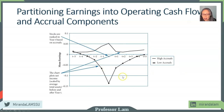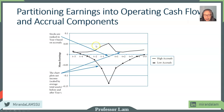Companies with net income scaled by assets show that low accrual firms will reverse, and high accrual firms will also reverse. When net income is high relative to operating cash flow, the firm will have recorded income-increasing accruals. Because accruals automatically reverse, they will eventually come down. When net income is low relative to operating cash flow, the firm is having income-decreasing accruals, which will also reverse in future years.